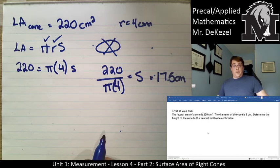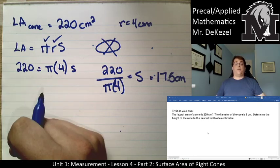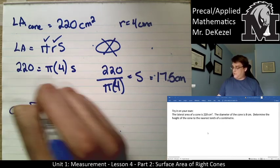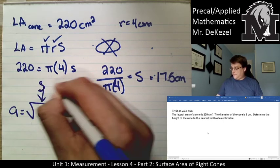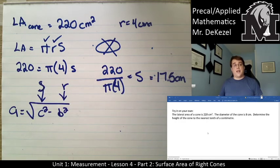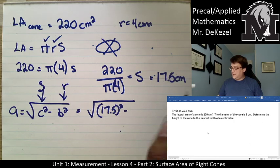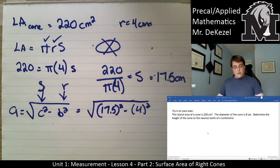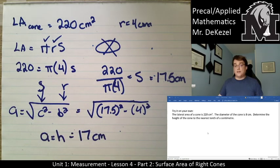With the slant height of 17.5 centimeters and radius of 4 centimeters, we use the formula a = √(c² − b²) — where c is the slant height and b is the radius — to find the height. That equals √(17.5² − 4²), which comes out to a height of 17 centimeters.